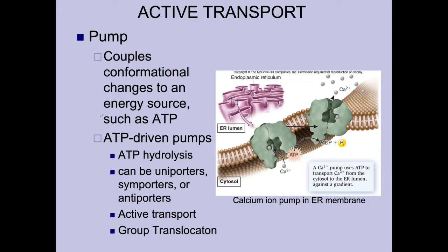In active transport, these transporters are usually referred to as pumps. Pumps couple a conformational change — caused by phosphate being added from ATP — to the movement of a molecule. An example is the calcium ion pump in the sarcoplasmic reticulum, a specialized region of the endoplasmic reticulum in cardiac muscle cells. ATP is brought over, a phosphate group is cleaved off releasing energy, and that energy drives the calcium ion pump to transport calcium ions against their concentration gradient to build up an electrochemical gradient.